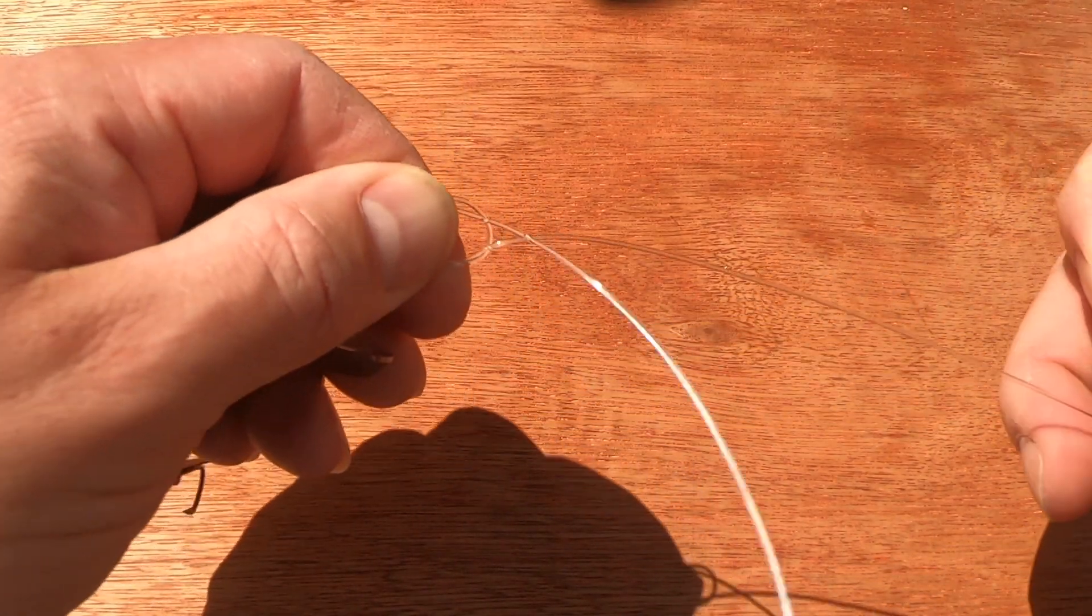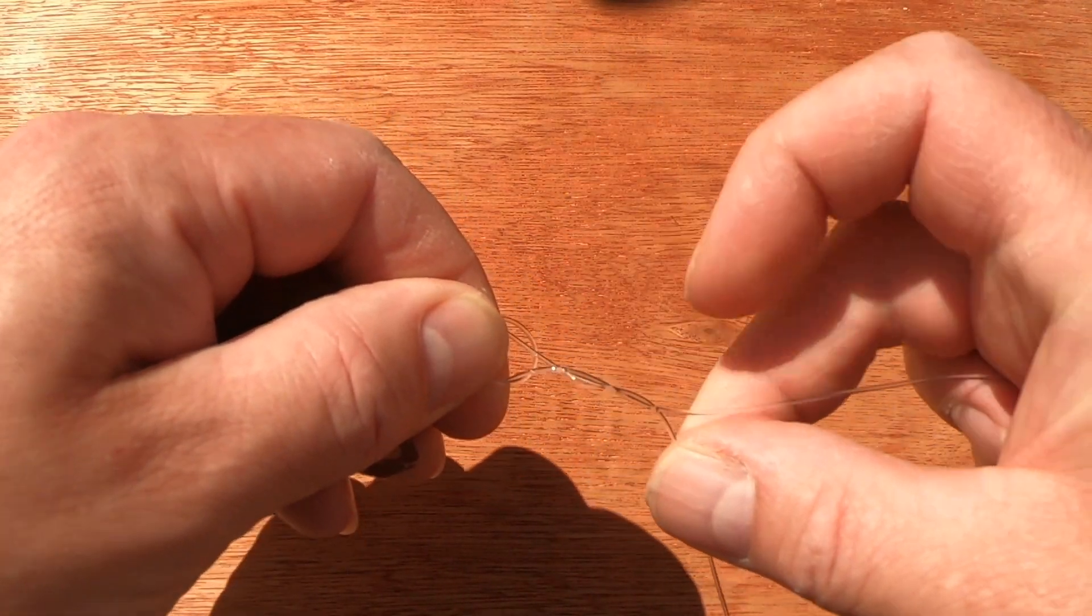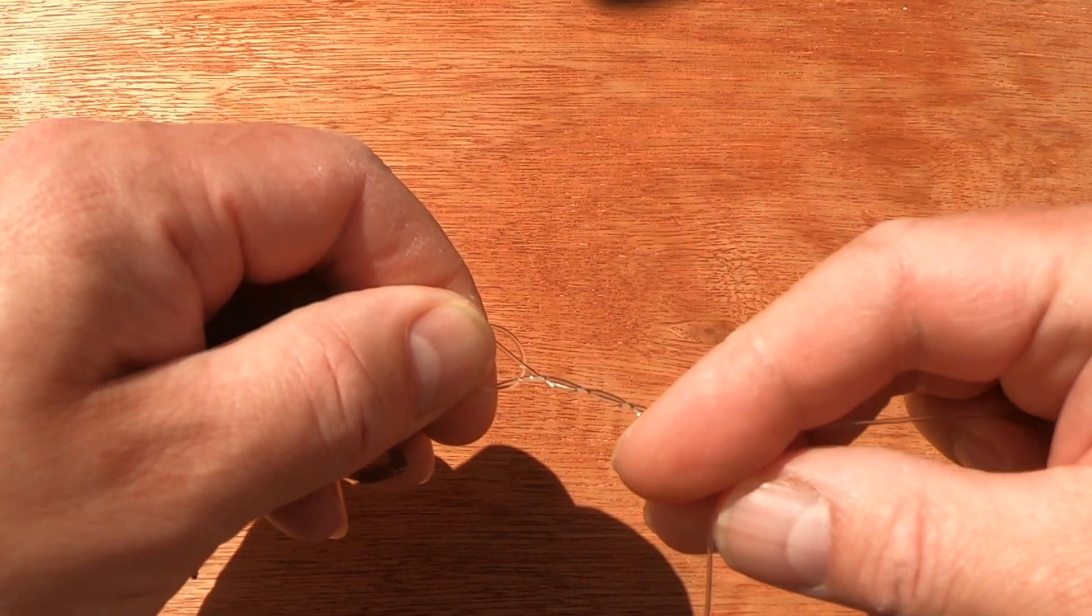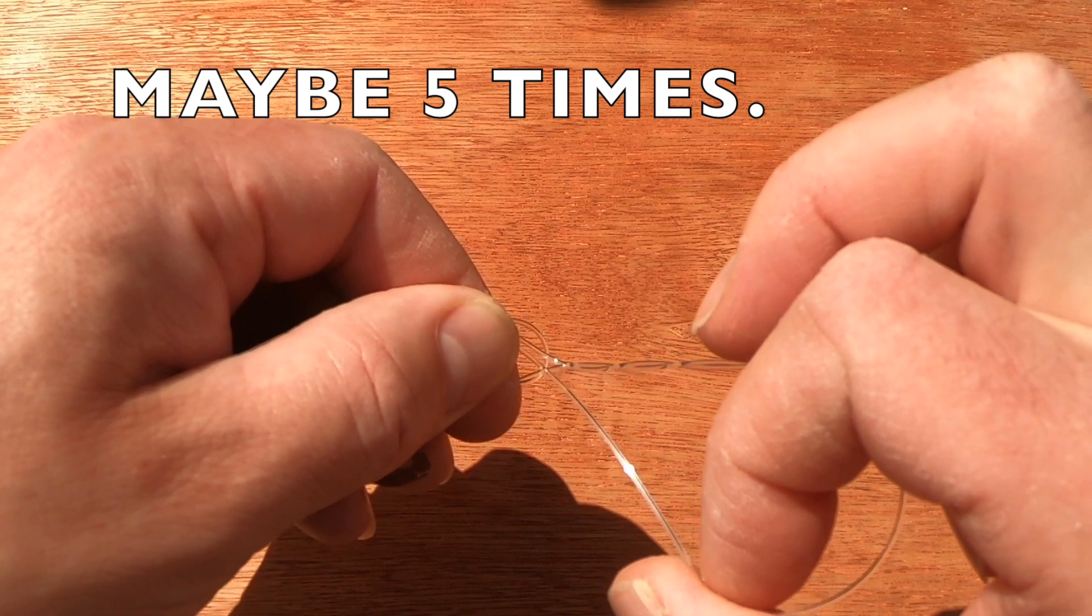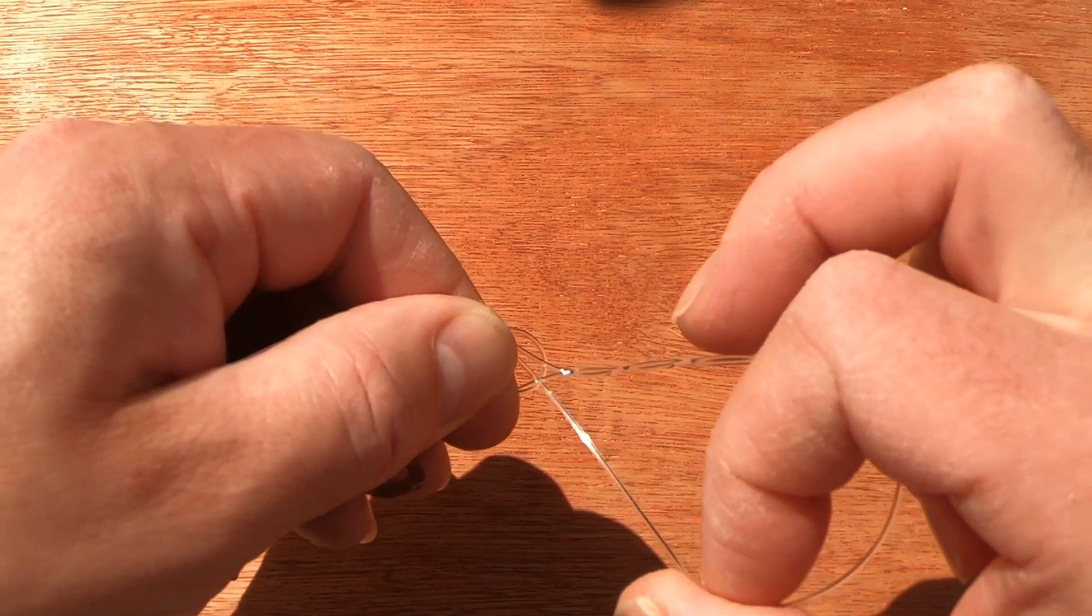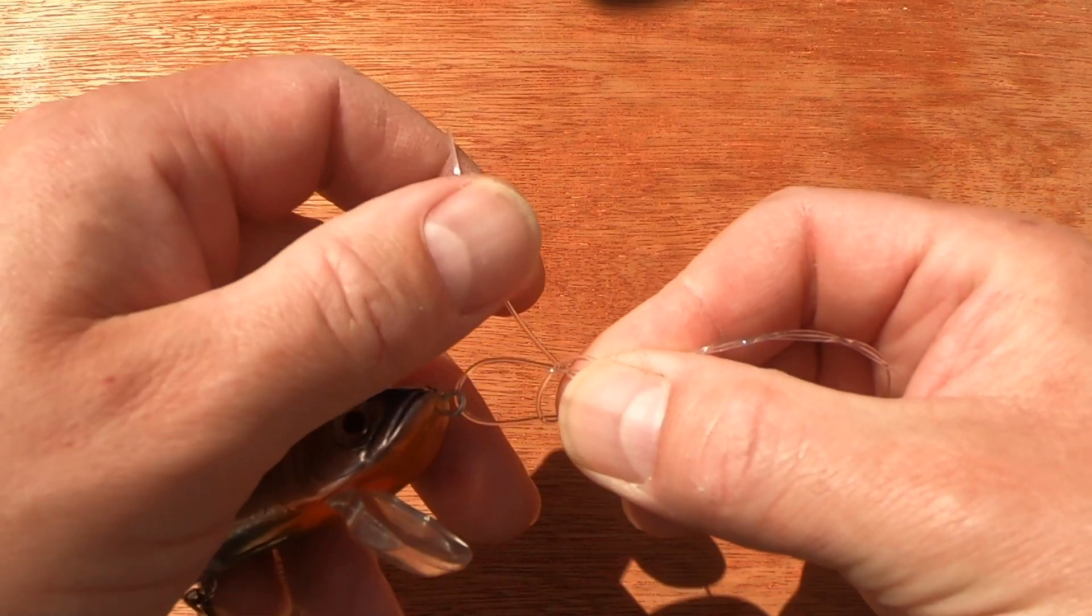Pull down slightly, pull your tag end, and you want to be leaving a loop here and not pulling this knot down too tight. And then all that remains to do is wrap this tag end around three times or four times of this fine line. This is 80 pound just for demonstration purposes. And then you're passing your tag end back through the middle of the knot you've created.